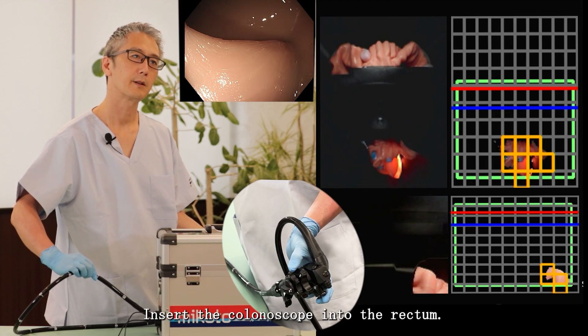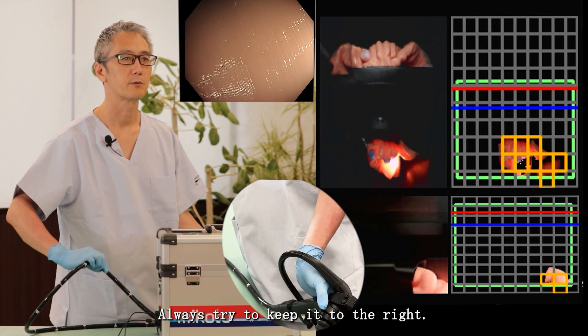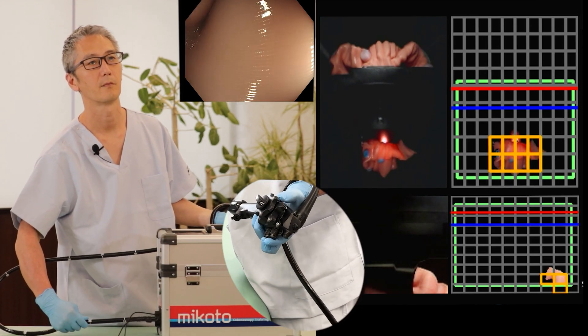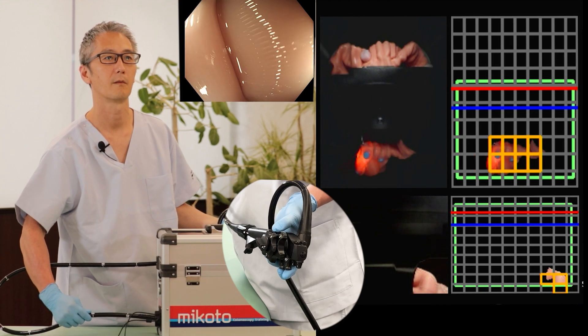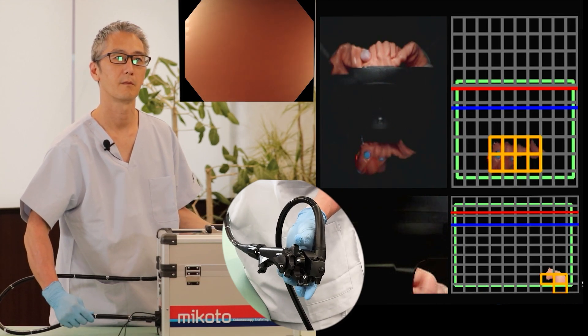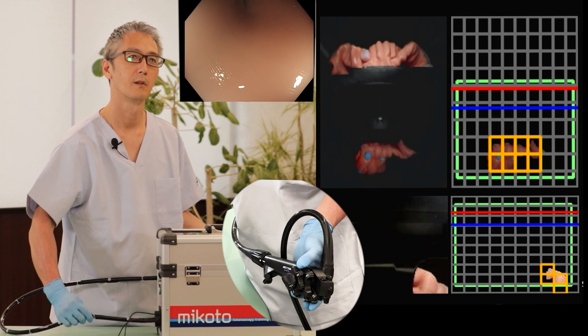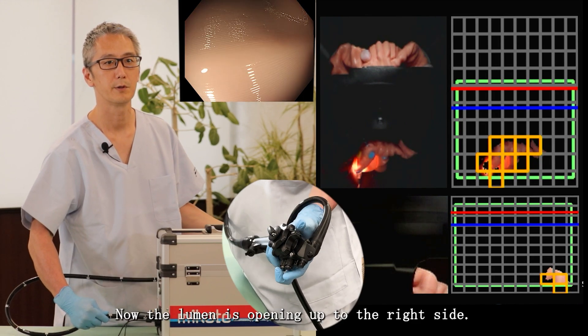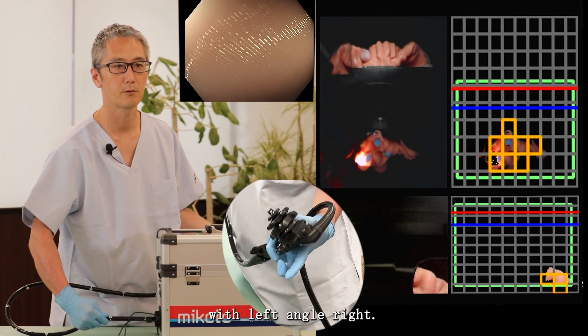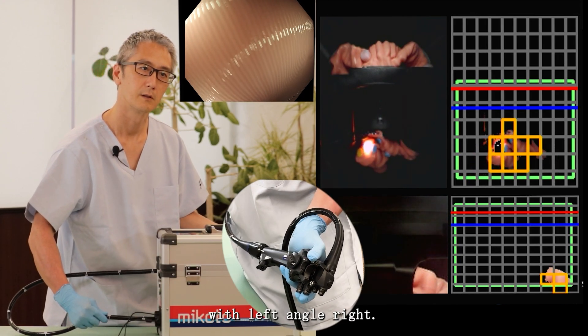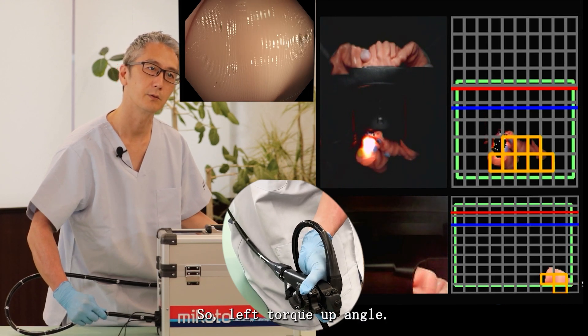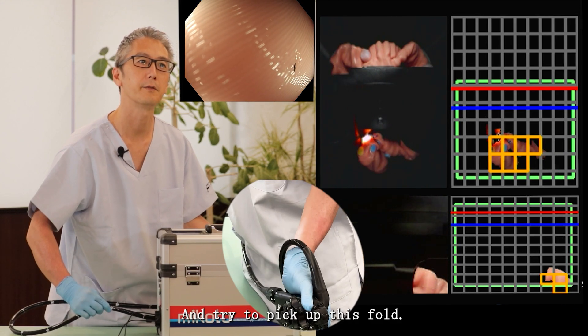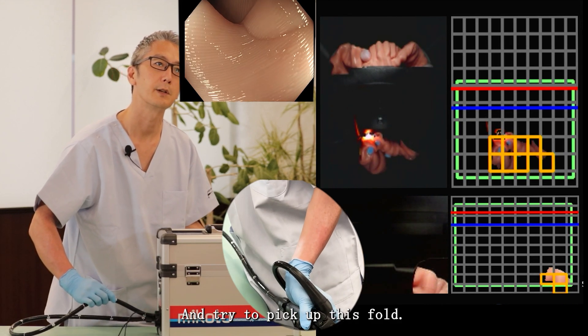Insert the colonoscope into the rectum. Always try to keep it to the right. Now the lumen is opening up to the right side with the left angle. Now it's coming to the left. So left torque, up angle, left hand. Try to pick up this fold.